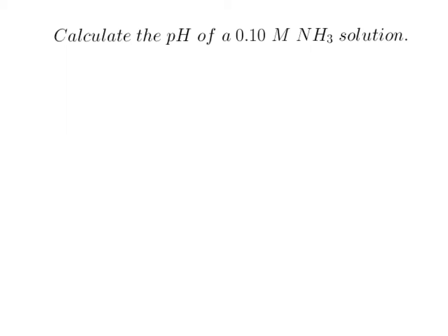So the first thing we have is problem number 16 from your notes. Calculate the pH of a 0.10 molar NH3 solution. The first thing we're going to do always is write an equation: NH3 plus water.